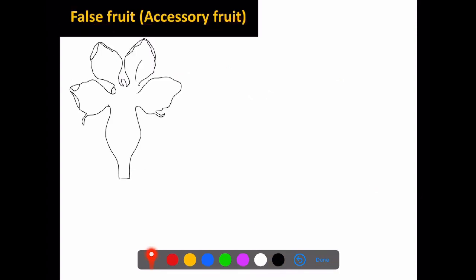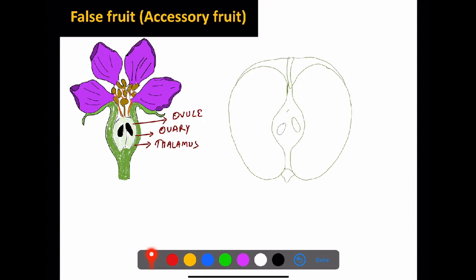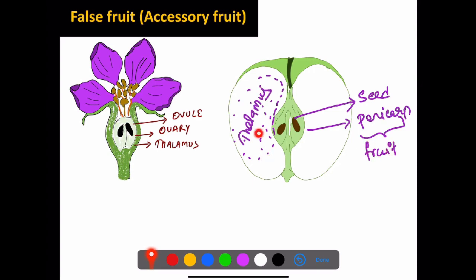False fruit or accessory fruit: in a normal fruit, only the ovary participates in fruit formation after fertilization. But in a false fruit, parts other than the ovary — such as the thalamus — also participate. In apple, the thalamus is fleshy and becomes the edible part. So biologically, apple is a false fruit because the edible part is the thalamus, not the ovary-derived pericarp.